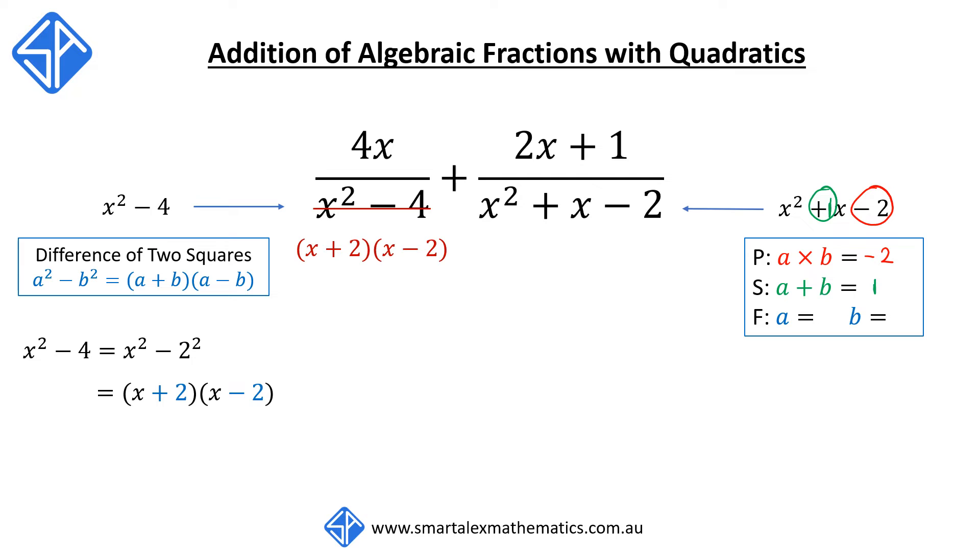The two numbers that will satisfy this condition would be if a is equal to 2 and if b is equal to negative 1, since 2 times negative 1 is negative 2, and 2 plus negative 1 is 1.